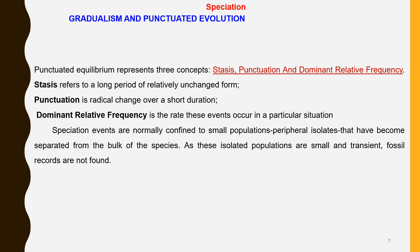The event of speciation is normally confined to small peripheral populations that have become separated from the bulk of the species. As these isolated populations are very small and transient, fossil records are not found.